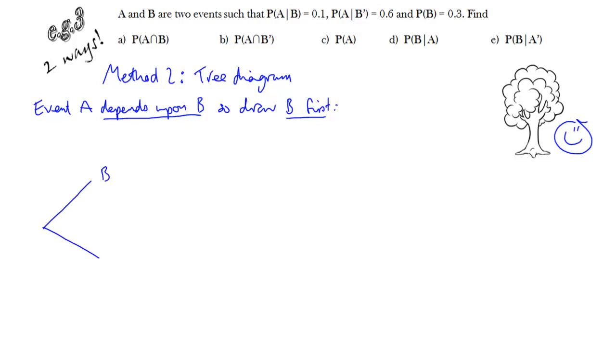So let's draw this out. The first split is whether B occurs or doesn't occur. We know the probability of B is 0.3, and therefore it's trivial to work out that the probability of not B is 0.7. The next split is whether A occurs or not, and it depends on whether B has occurred. This one here is the probability of A given B. Because we know that we've gone along the branch for B, so that's the probability that we need. And we know that one, and the 0.9 we can just work out by subtraction.